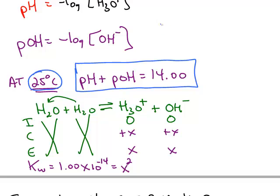If you have a solution that's acidic, the pH will be less than 7. And if you have a solution that has a pH higher than 7, that solution is basic. But this definition is only at 25 degrees.